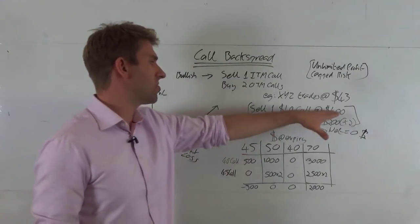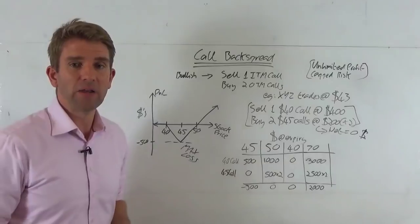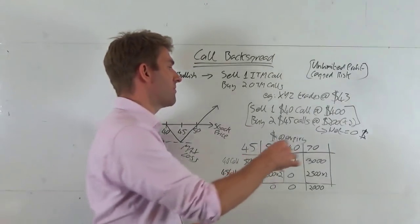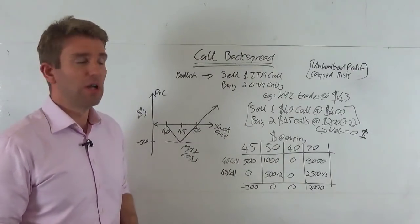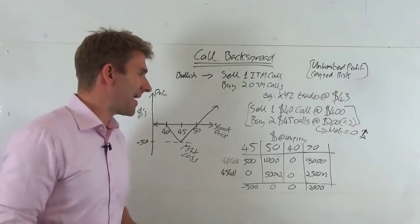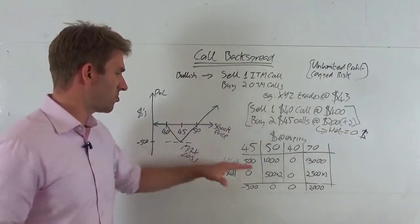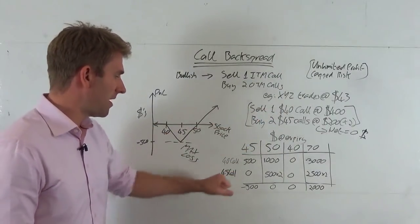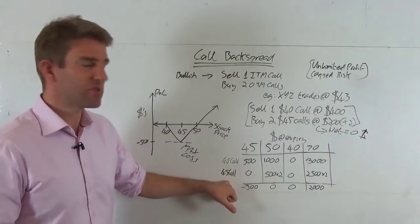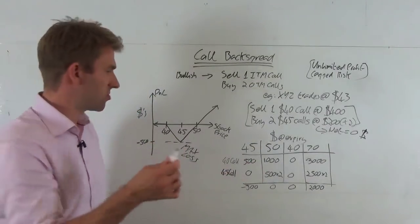Because what would happen at $45? Well, the $40 call that we sold would have $500 worth of value, which is not very good for us because we've already sold this thing. So we actually have a $500 loss on that because it's now worth $5 times by the $100. That's $500. Well, that's the value of the options contract. Don't forget we paid $400 for that. The $45 call is worthless. So theoretically, we've only lost $100 on that because we were short $400. So we lost $100.